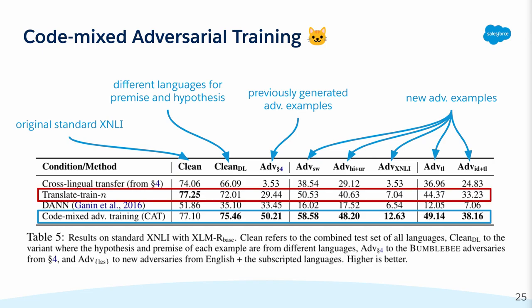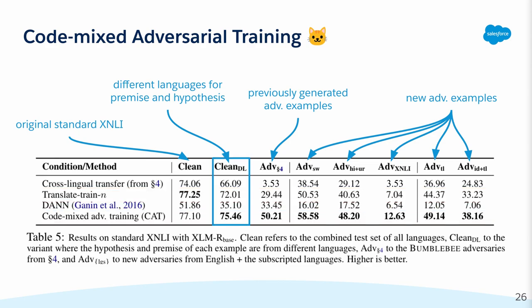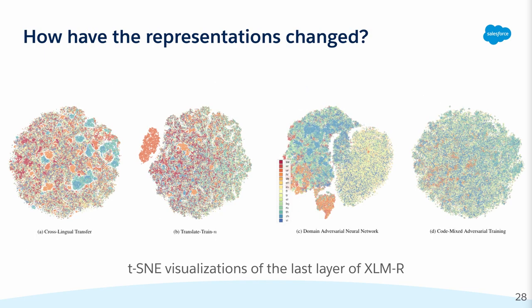Attacking the model again with new adversaries reveals the improved robustness of our method, even against the stronger baseline in the second row, and even against adversaries from new languages that were not seen during fine-tuning time, which are represented by the two columns on the extreme right. We also notice that our method significantly improves model performance over the other baselines when the premise and hypothesis are from different languages. This particular setting hinders the model's ability to rely on lexical overlap. Finally, we visualize the representations of the various training methods and find that ours produces the most language-agnostic representations, as you can see from the figure here.